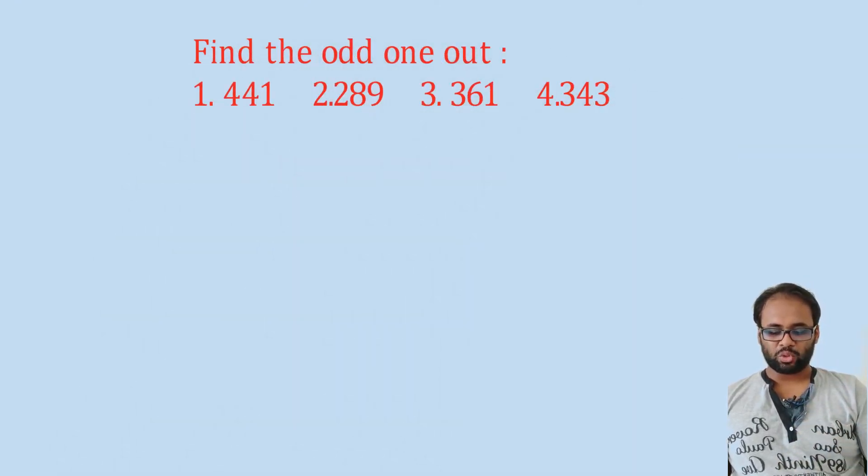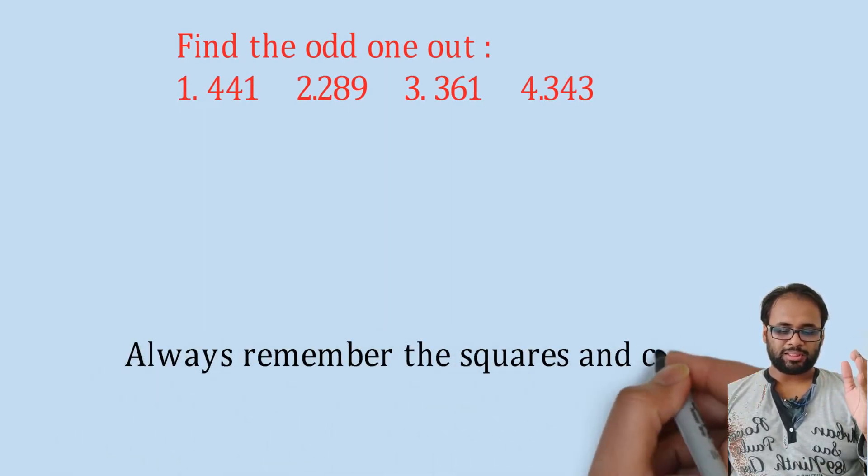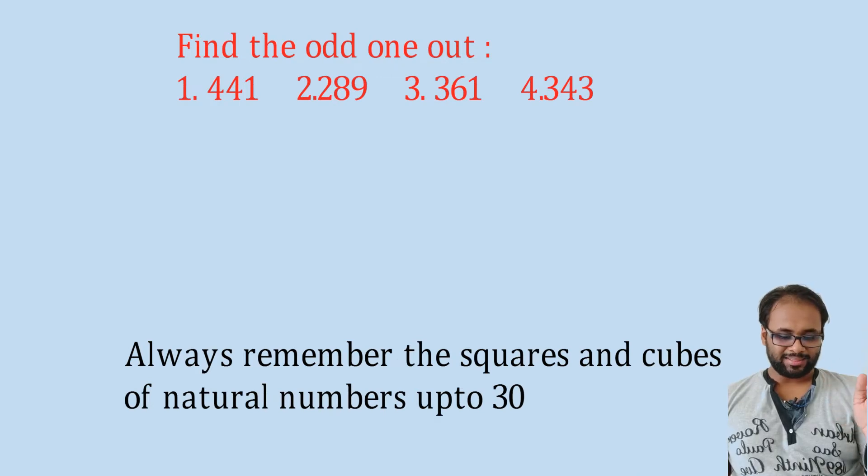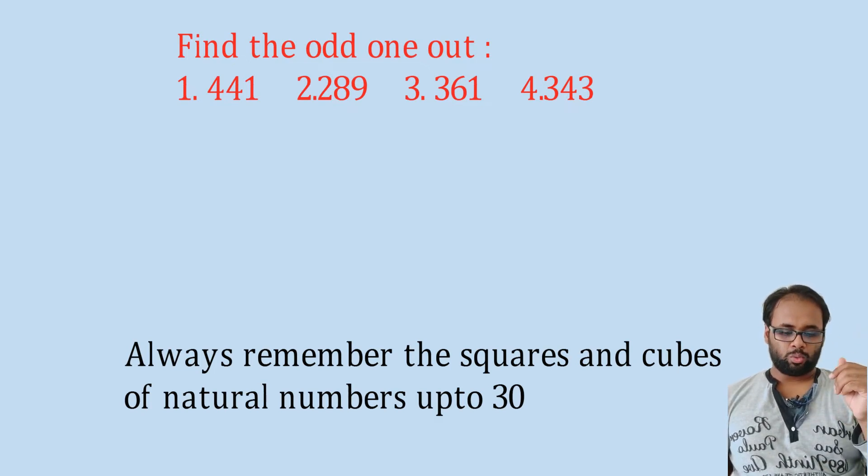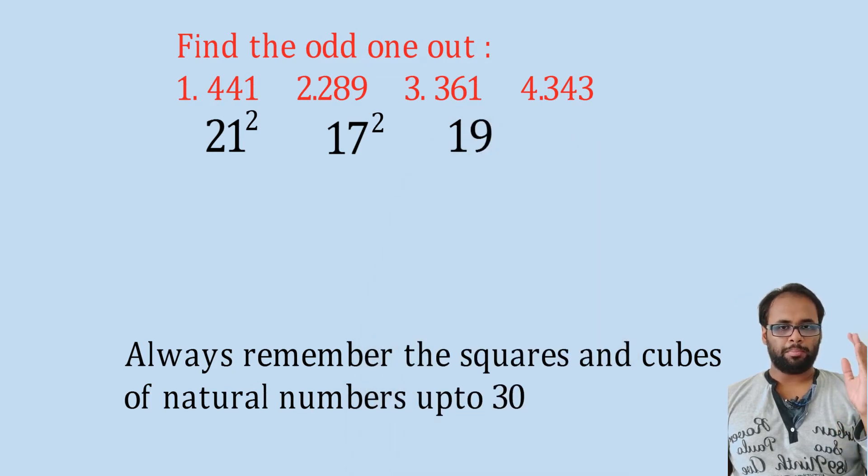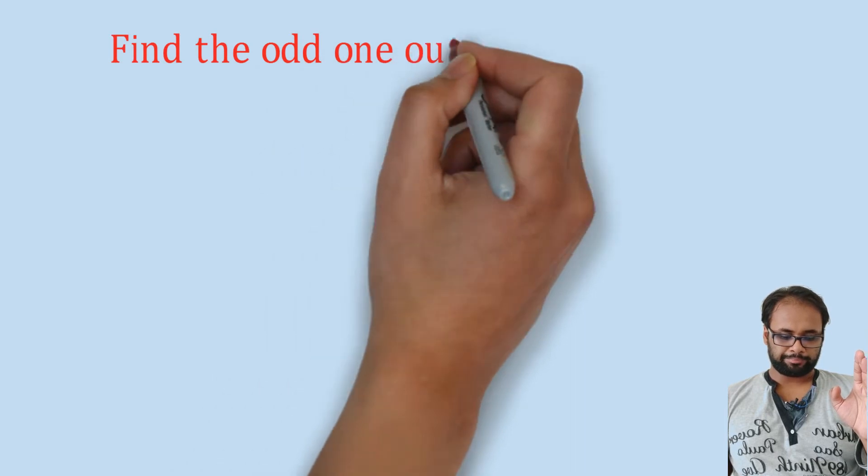Next question: find the odd one out - 441, 289, 361, 343. We need to find the odd one out. 441 is the square of 21, 289 is the square of 17, 361 is the square of 19, while 343 is the cube of 7. As I have already said, you need to memorize the squares and cubes of all integers from 1 to 30. This is highly recommended for any examination. The 4th option, 343, is the odd one out because it is not a square, it is a cube.